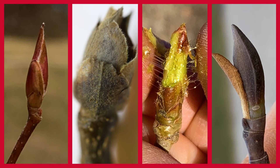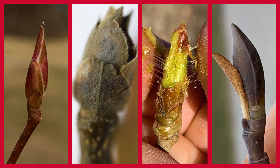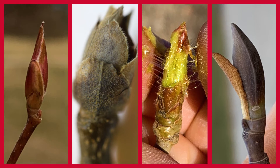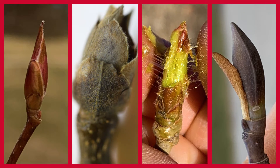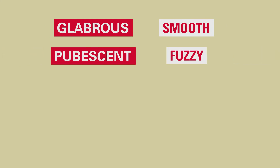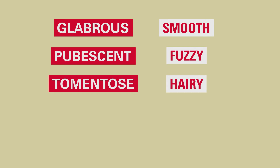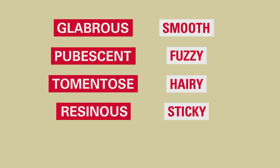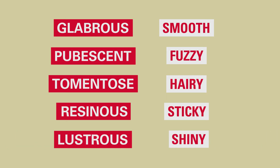Bud scales also exhibit a wide range of textures. Take a very close look and even feel to determine bud textures such as glabrous meaning smooth, pubescent meaning fuzzy, tomentose meaning hairy or woolly, resinous meaning sticky or gummy, or lustrous meaning glossy or shiny.